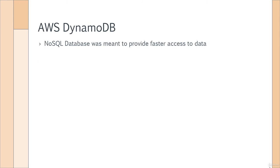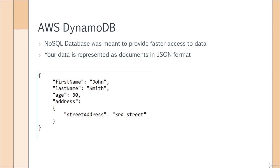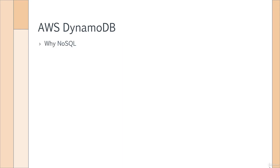When it comes to NoSQL, NoSQL databases were introduced as a means to provide faster access to data. Your data would be represented as documents in JSON format. This is similar to having a table with four columns — first name, last name, age, and address — except that it's being represented in JavaScript Object Notation. It's like having a flat file on your system, and then instead of querying column by column or row by row, you're querying document by document. NoSQL allows you to have faster access to your data — it's like accessing your flat file system, which would be faster than probably querying a database.